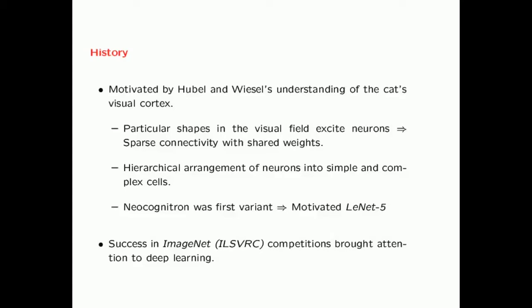The basic structure of the convolutional neural network has not changed much since LeNet-5 was proposed. There have been some advances in training, but the main difference is that the amounts of data available for training have become very large. This has led to huge success in image classification competitions — in particular, the ImageNet competition, in which deep learning methods and specifically convolutional neural networks have been consistent winners, bringing great attention to this broader area.